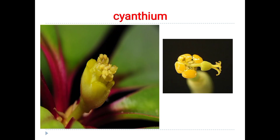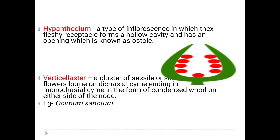When the center flowers mature early compared to the peripheral flowers, if you see this fluorescence structure, the peripheral flowers mature late compared to the center ones. Another special type is hypanthodium, where the receptacle turns fleshy. The fleshy receptacle transforms into a hollow structure called a hypanthodium, which contains a variety of flowers inside it — both male and female flowers are present inside.